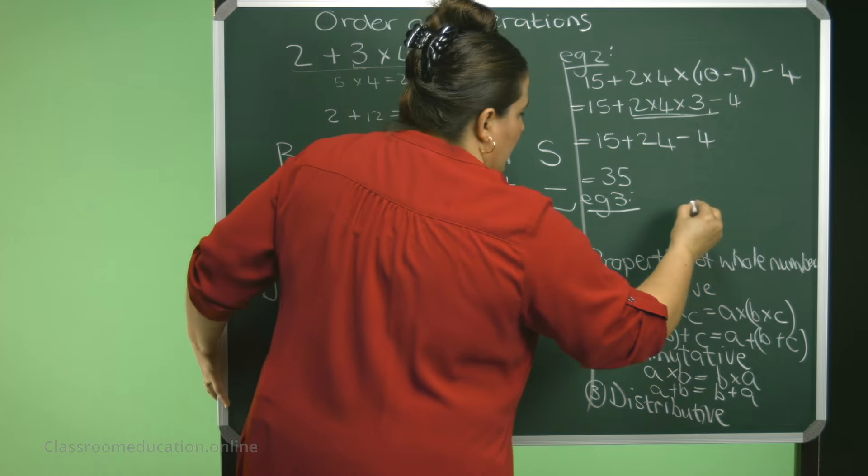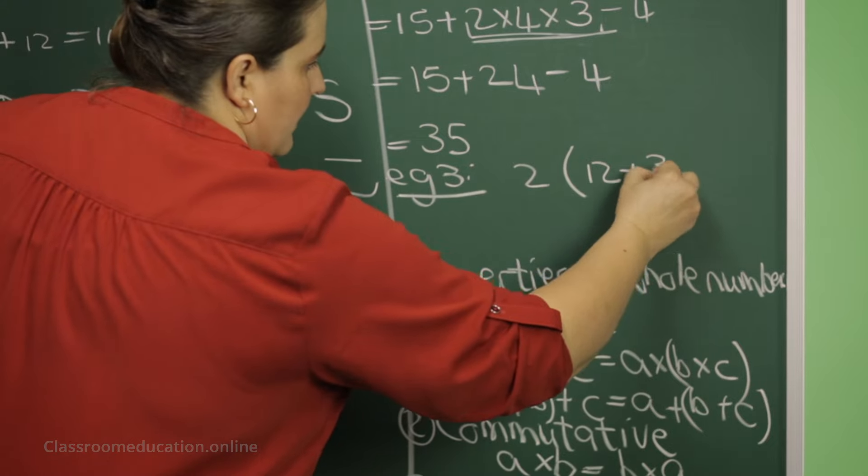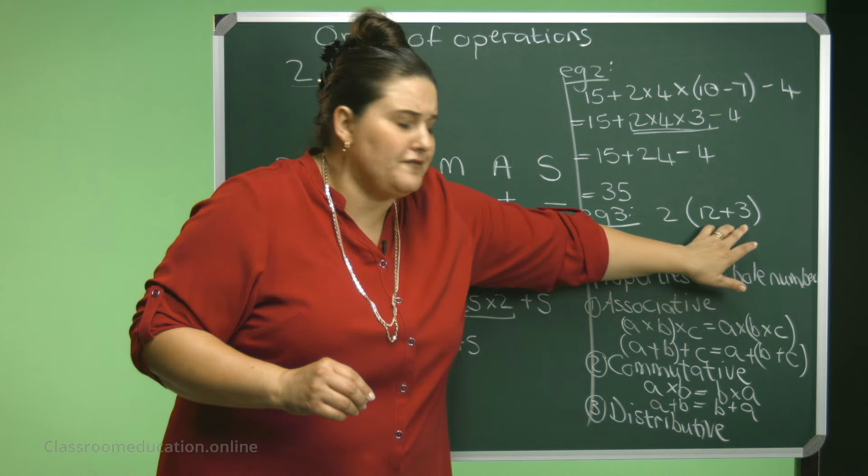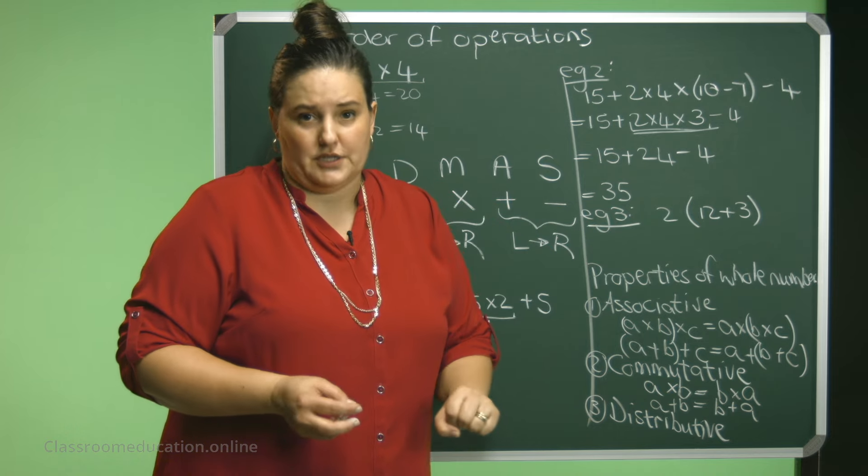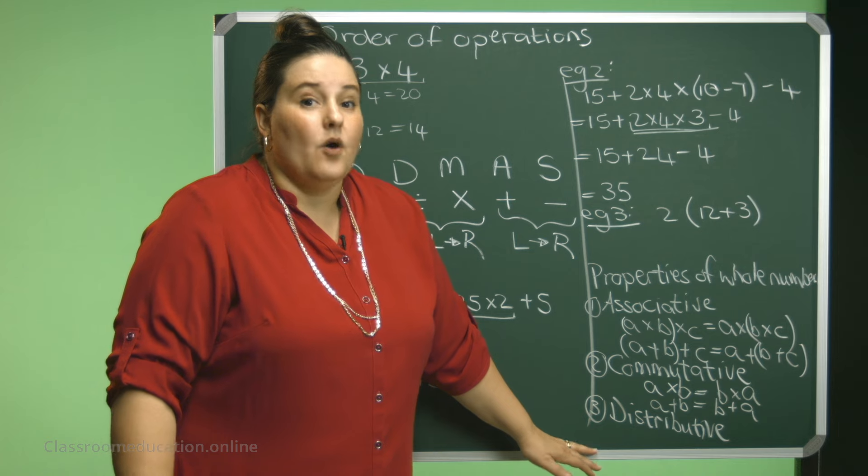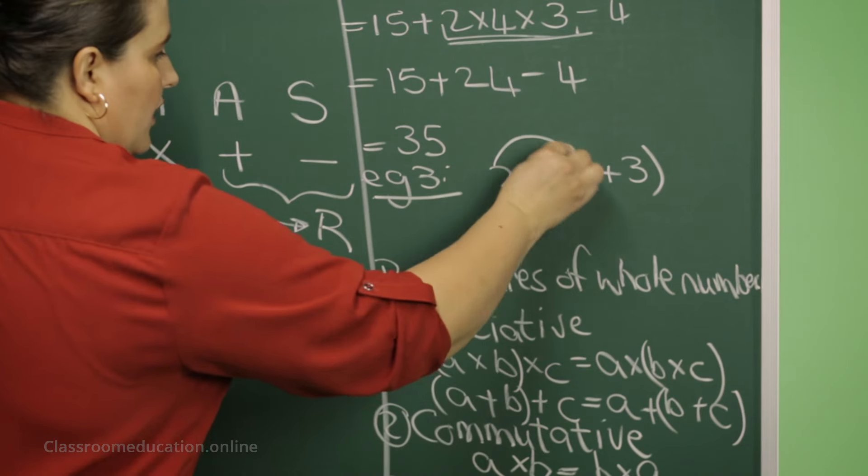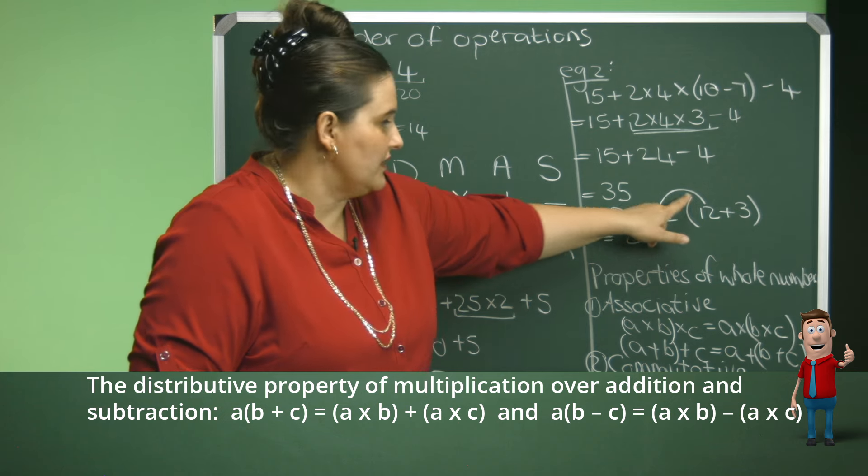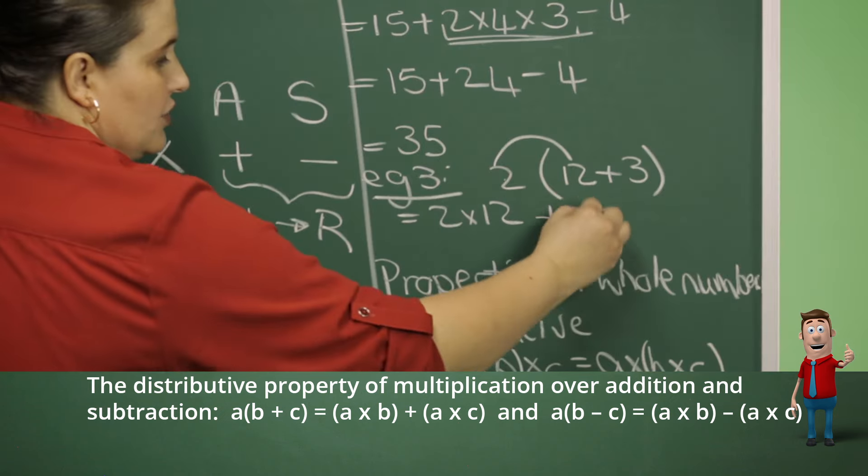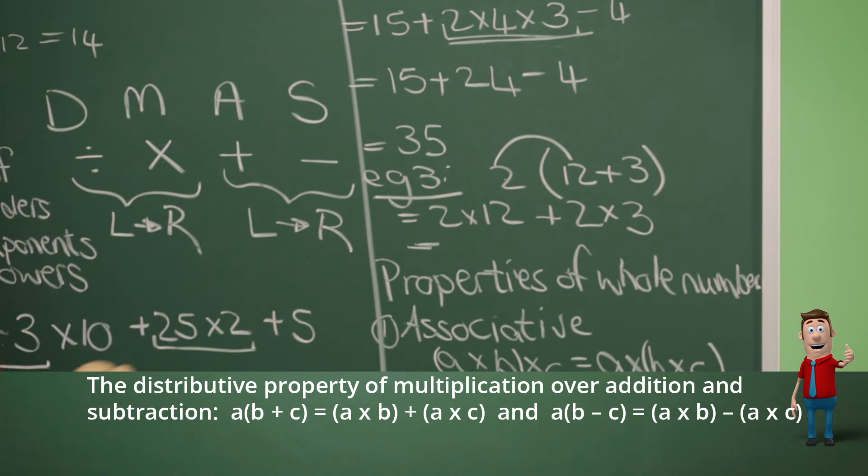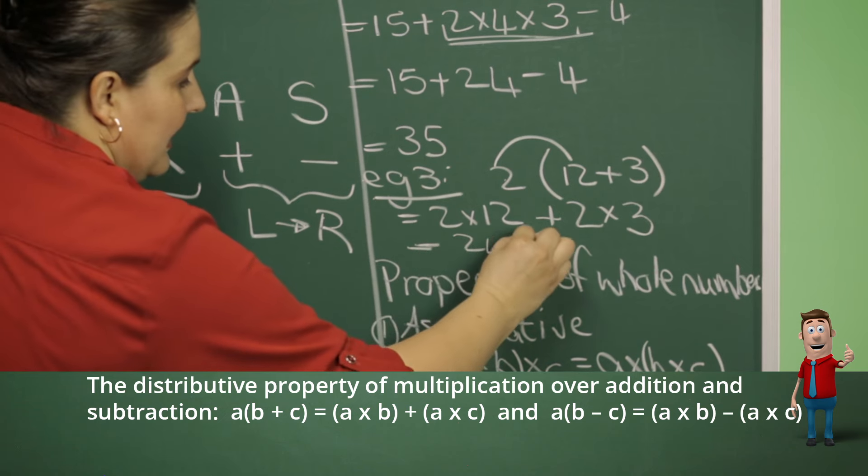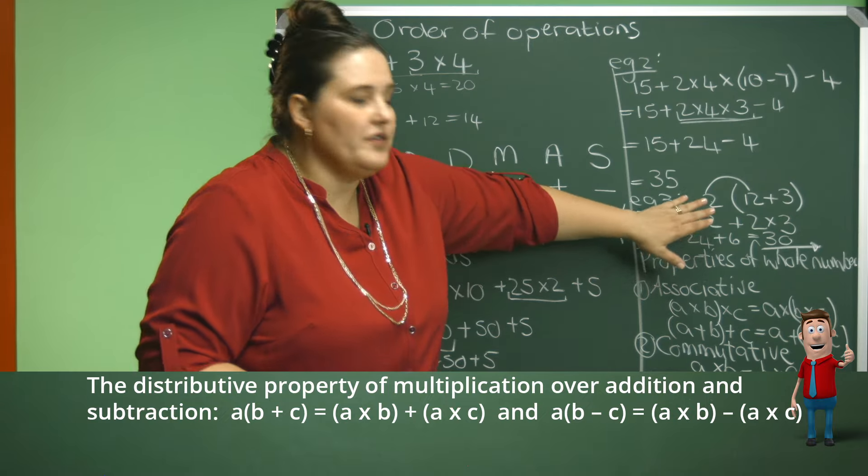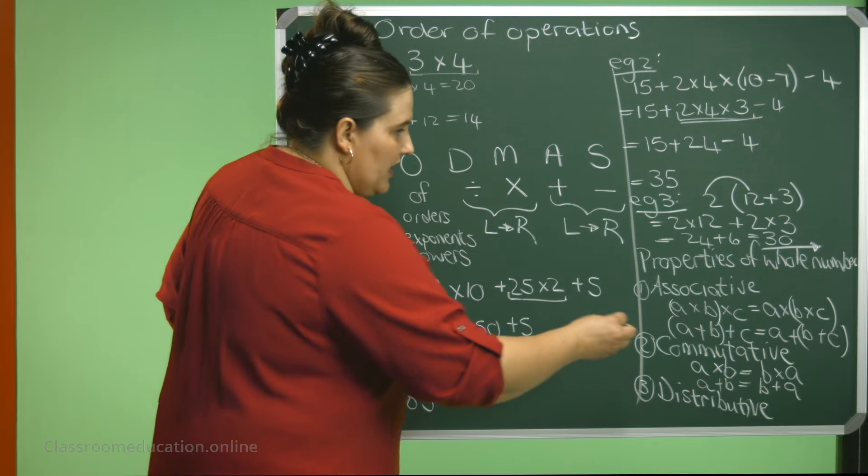Now, let me show you. I'm going to do an example there. Example 3. I will have 2 times 12 plus 3. Now, I could have said, now, I could have done my brackets first by saying 12 plus 3 is 15, and then 2 times 15 will be 30. Or, and this is the distributive property, what can I also do? I can say, you know what? 2 times 12, I'm multiplying the 2 outside the bracket with a 12, plus the 2 times 3 will give me an answer of 24 plus 6, and that is 30. So, I got to the same answer. So, this we call the distributive property.